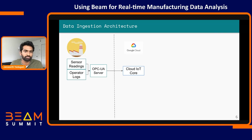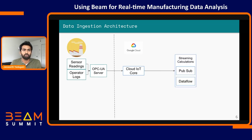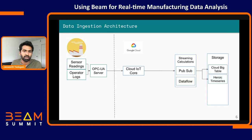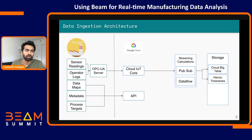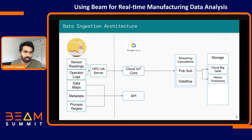We are completely on Google Cloud, so we use Cloud IoT Core as the entry point from the factory into the cloud. It publishes messages into PubSub, and a lot of streaming calculations happen in that block using Dataflow Runner. Once data is extracted and transformed into our Odin data model, we store it in a time-series database for retroactive access. On the other hand, data maps, metadata, and process targets — one-off information configured during customer onboarding — are received via API and stored in Cloud SQL with Postgres.